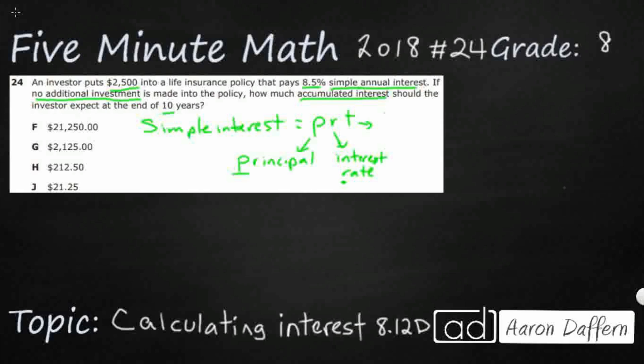And then this T stands for time. What's the timeframe? Typically it's going to be years. In this case, it is years. It did say that it was going to be annual interest. So annual is just a fancy way of saying yearly. And it's for 10 years. So our timeframe is 10 years. We have $2,500 principal, we have an 8.5% interest rate.